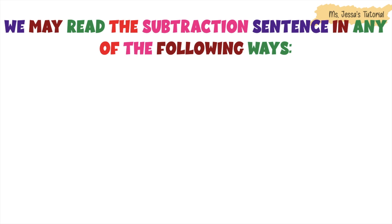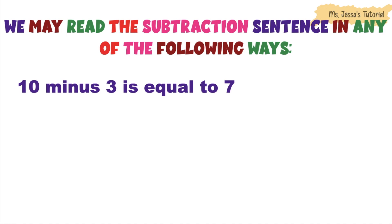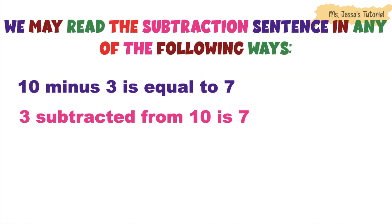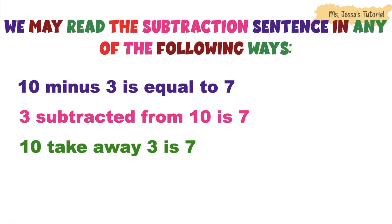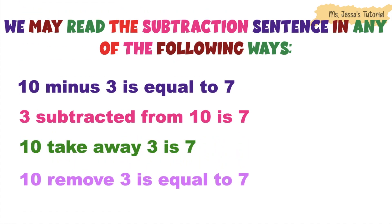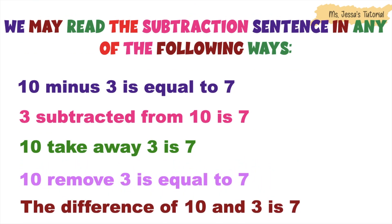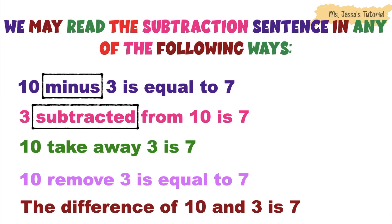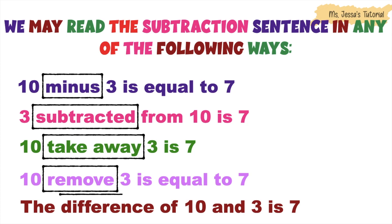We may read the subtraction sentence in any of the following ways: 10 minus 3 is equal to 7. 3 subtracted from 10 is 7. 10 take away 3 is 7. 10 remove 3 is equal to 7. And the difference of 10 and 3 is 7. Once you encounter these words — minus, subtracted, take away, remove, difference — you're talking about subtraction.